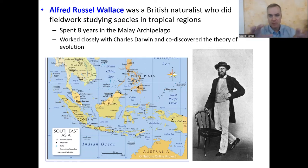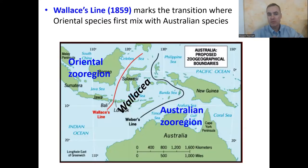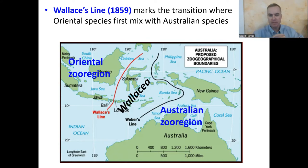They both came up with the theory of evolution by talking and discussing things, not just one or the other, even though Darwin usually gets credit for it. Wallace was a zoogeographer among other things, and he came up with a map showing a line he noticed in the Malay Archipelago — called Wallace's Line.